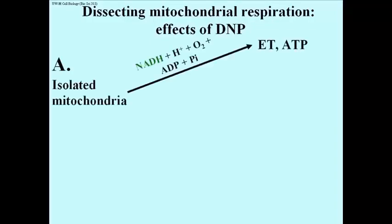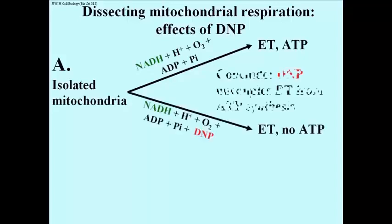Mitochondrial isolates could oxidize NADH or FADH2, consume oxygen and make ATP. Mitochondria treated with dinitrophenol, while still able to oxidize the reduced electron carriers and consume oxygen, would not make ATP.